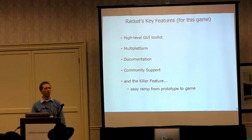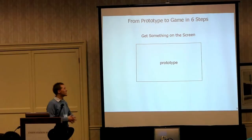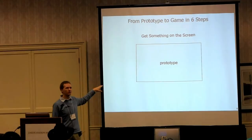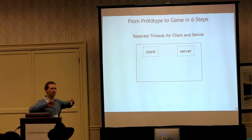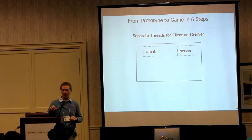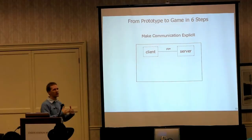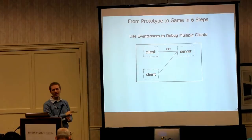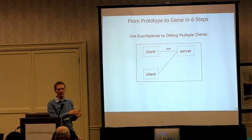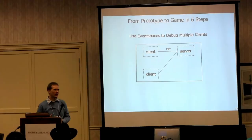For me, the killer feature of Racket is the easy ramp from a prototype to the finished game. Six steps. First, getting something on the screen — just getting triangles and squares moving around. Then get two threads running, starting to separate the code into the client part and the server part. They still share state, so the next step is to make the communication explicit — now the server's idea and the client's idea of what's going on communicate over a pipe. Then debugging multiple clients in the same process space using the fantastic event spaces, which was as simple as running the client code once, making a new event space, running it again, and everything just works.